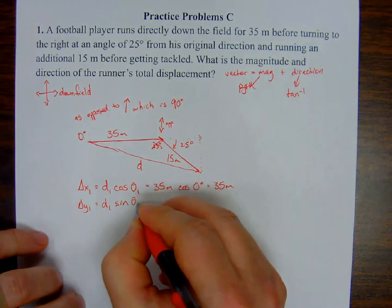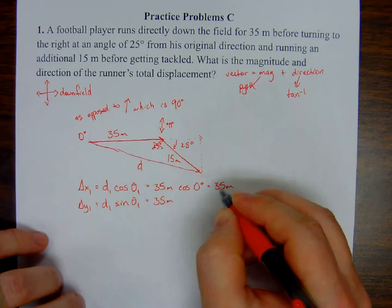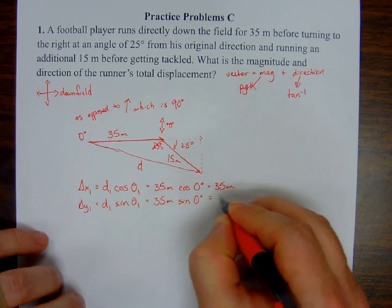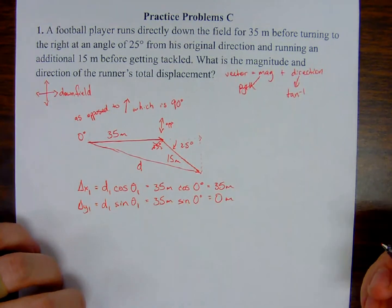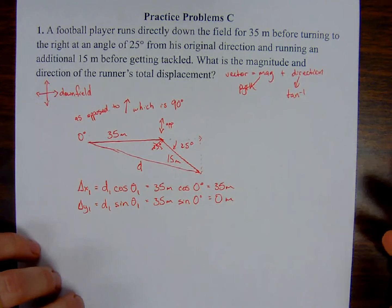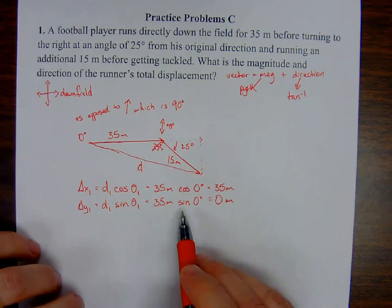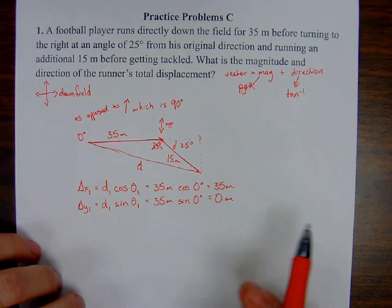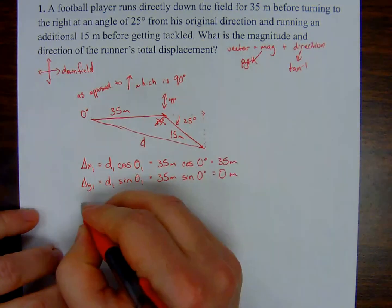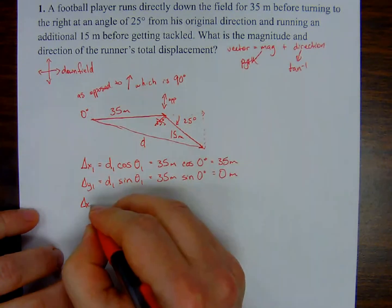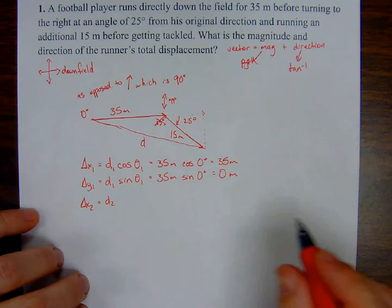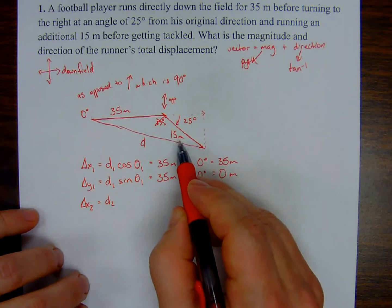Now for the second triangle. The X component of the second displacement: the adjacent side relative to the 25-degree angle uses cosine. That's 15 meters × cos(25°), which rounds to 14 meters to two significant figures.